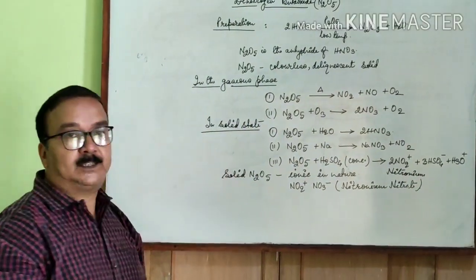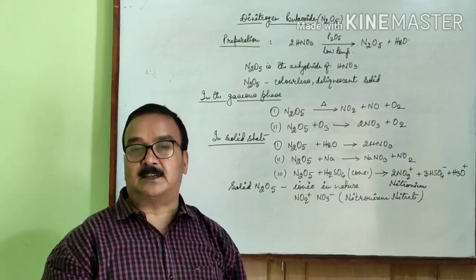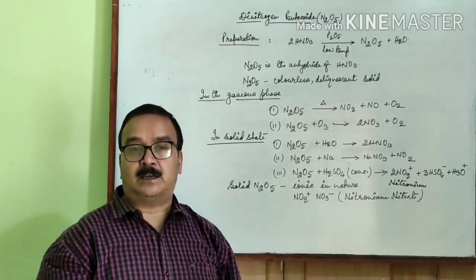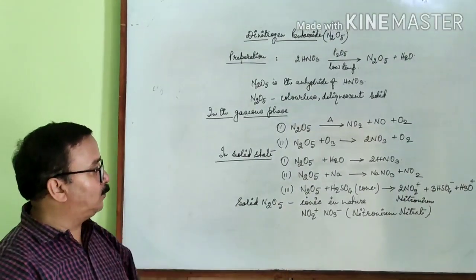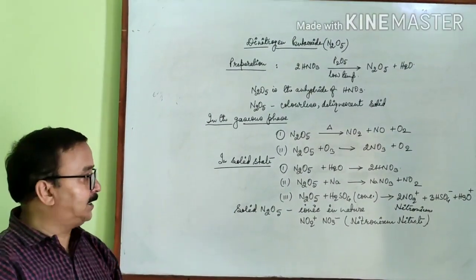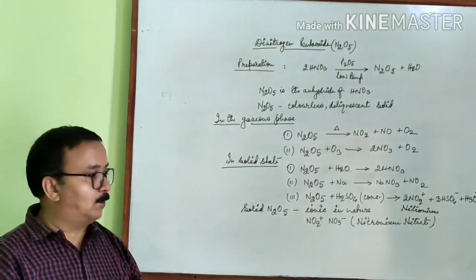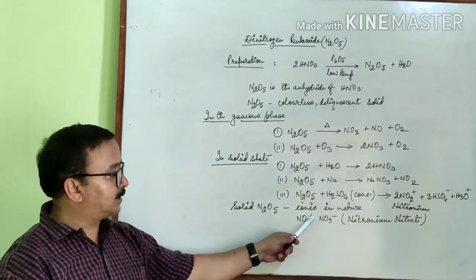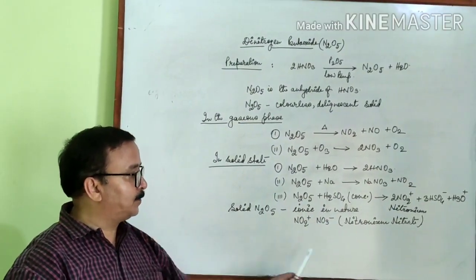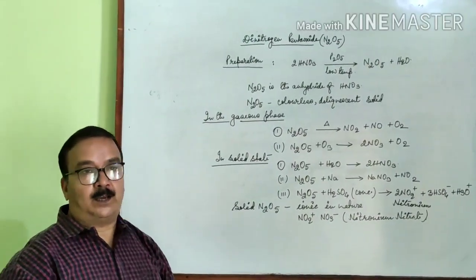Now nitronium ion is used in the nitration reaction of benzene in organic chemistry. Always remember that solid N2O5 is ionic in nature. Why is it ionic in nature? Because N2O5 exists in the form of NO2+ NO3-, that is nitronium nitrate.